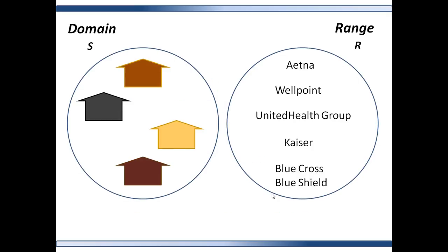But suppose again each element in the domain is a business, and the elements in the range are the names of the insurance companies, and the function maps each business in the domain to the names of all the health insurance companies offered by the business. This is not a function. Even though every element in the domain maps to the range, some of these elements map to more than one element in the range. Therefore, this is not a function.